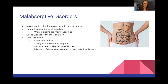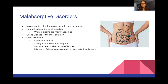We're going to start off talking about malabsorptive disorders. Malabsorption of nutrients occurs with a lot of diseases, and normally this affects the small intestine because that's where most absorption takes place. Other diseases can affect this as well, such as infectious diseases, short gut syndrome from surgery, structural defects like strictures and fistulas, and deficiency of digestive enzymes like pancreatic insufficiency.